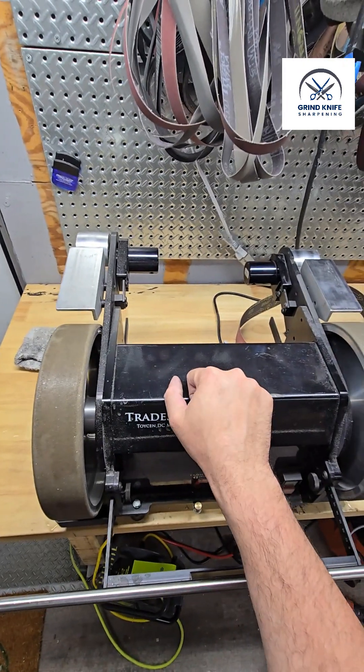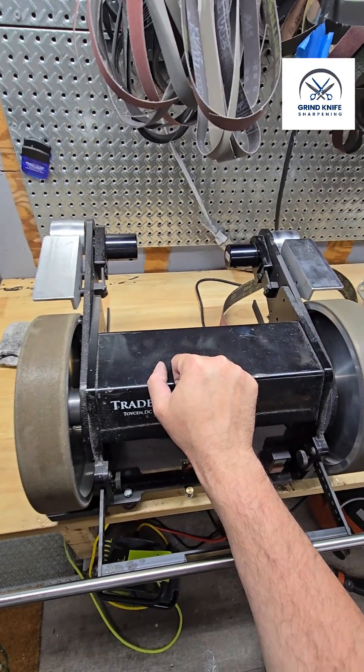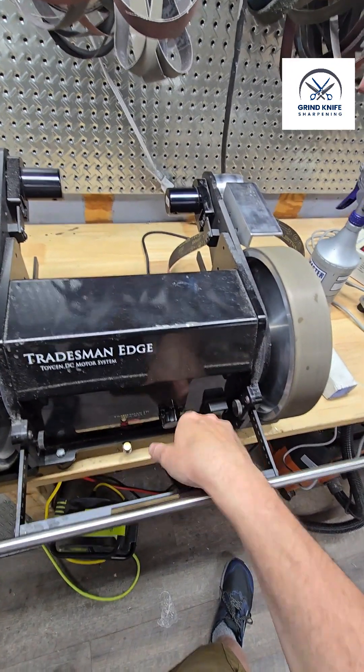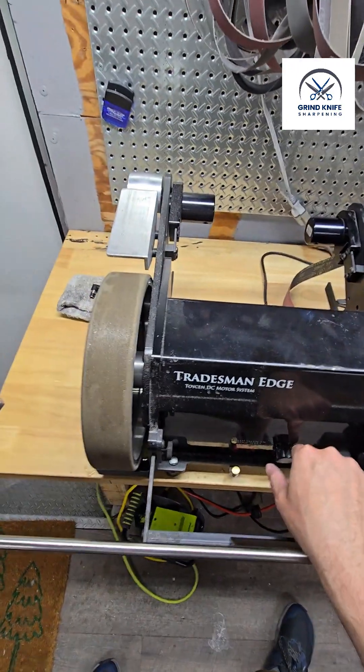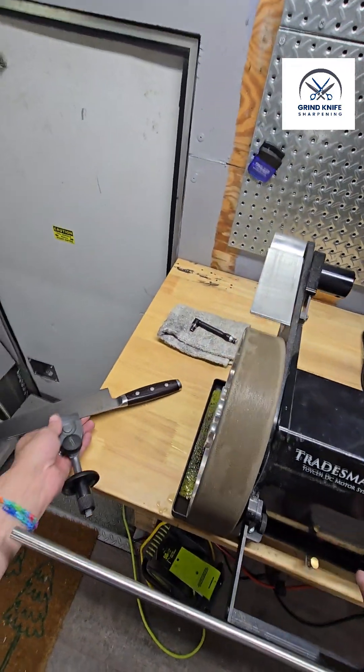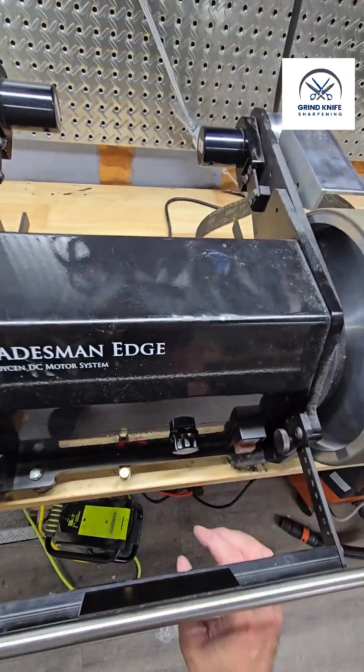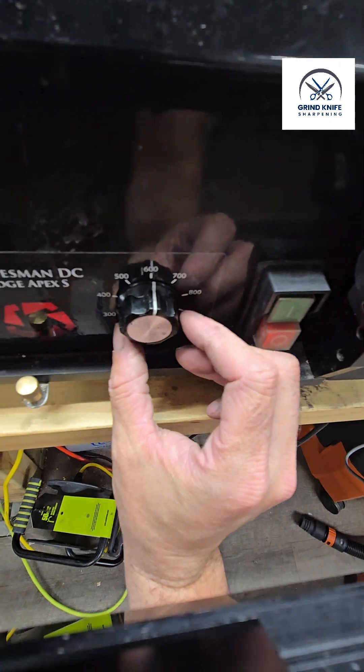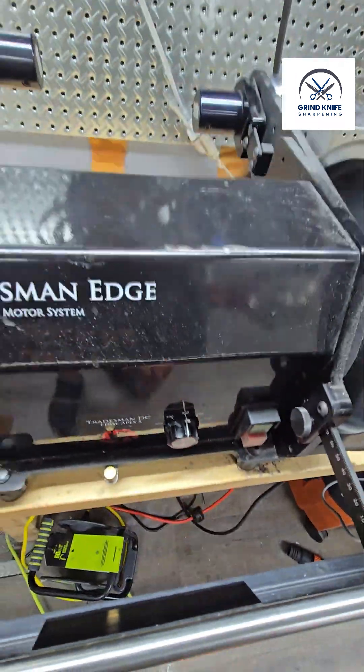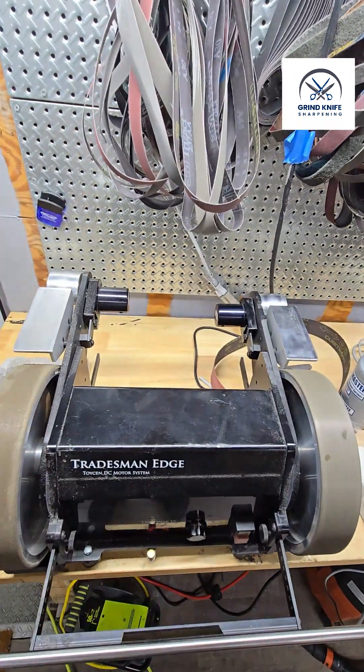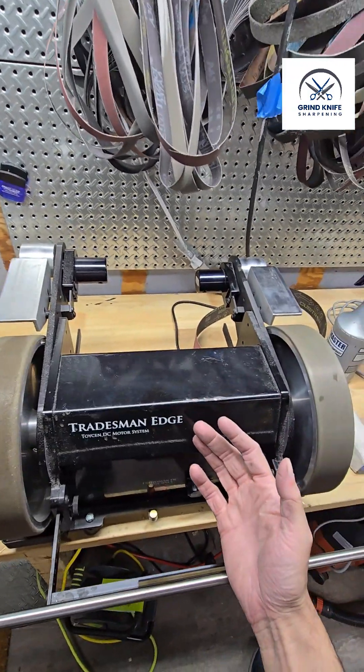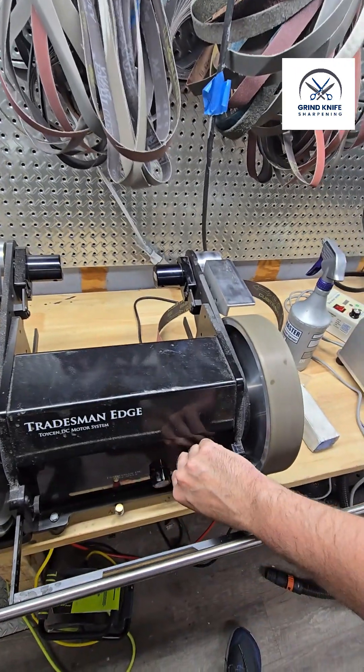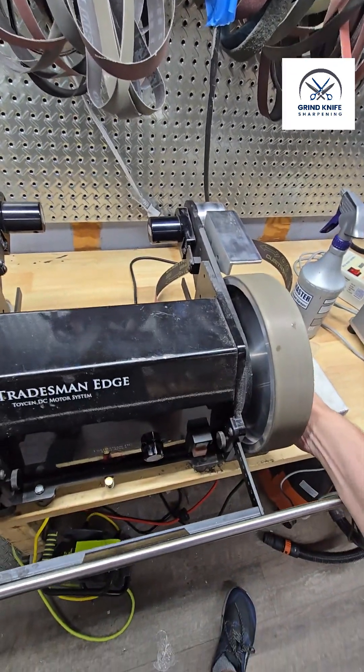This machine is variable speed from 200 all the way up to 1000 RPMs, and so my sweet spot I like to cook at is about 600 RPMs. And so we're going to demonstrate that today, but we don't necessarily have to run it that fast. We can go down to 200 and sharpen similar speeds to Tormek. Everything just takes just a touch longer because we're going at a slower speed.